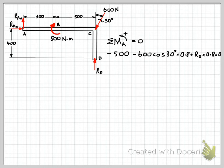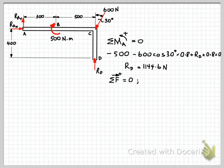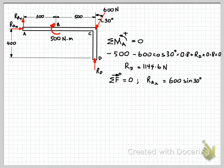Solving the algebra for our unknown force RD, we get 1144.6 N. Now we can use the other two equations of equilibrium. First, sum of forces in the horizontal direction equals zero. From our free body diagram we have RAX and the horizontal component of the 600 N force. So: RAX equals 600 sin 30. Solving gives RAX equals 300 N.